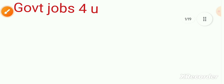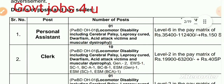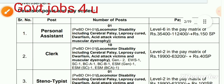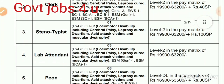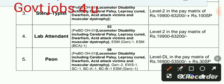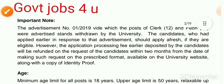अब हम बात करते हैं Personal Assistant के पद के बारे में जिसकी salary लगभग 75,400 रुपये है। इसके अलावा Peon के लिए 8 पदों पर आवेदन मंत्रित हैं और 16,900 से लेकर 35,500 रुपये plus 30 ESP आपको permanent salary मिलने वाली है।